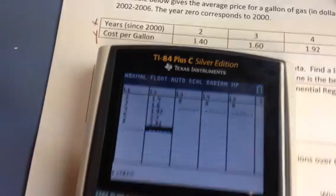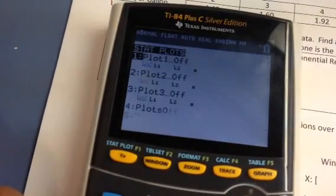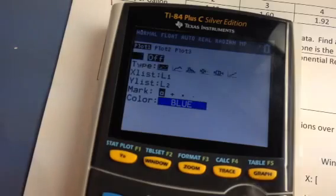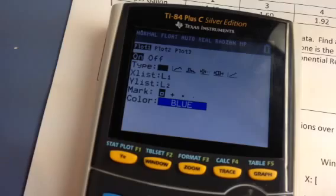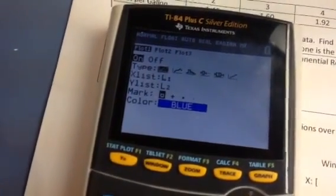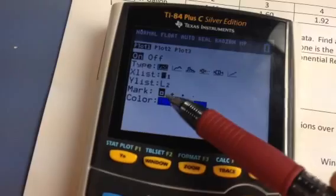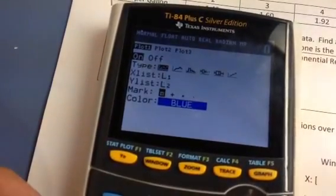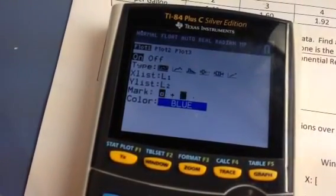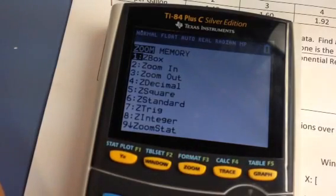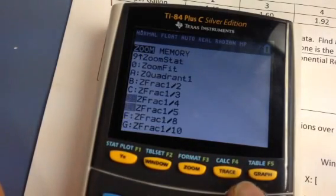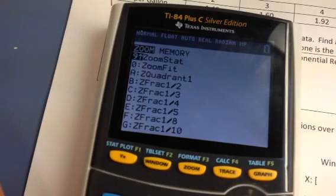Alright, what we need to do is first get this so that we can see it. So go to 2nd, Y equals, and you're going to choose plot 1, so hit enter. And you want to make sure it's on, so hit enter. And then you also want to make sure that it is L1 and L2 here and then choose how you want it to mark it. So this is the only choice you get. And once you've got that we're going to press zoom and we're going to press, well I better double check this one, zoom nine for stat.